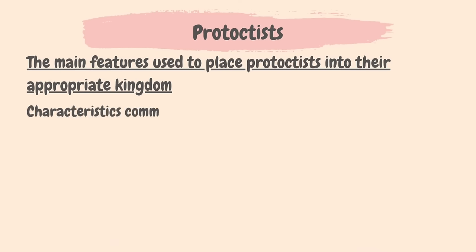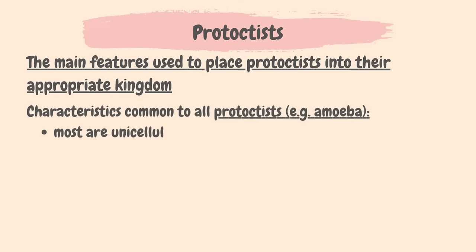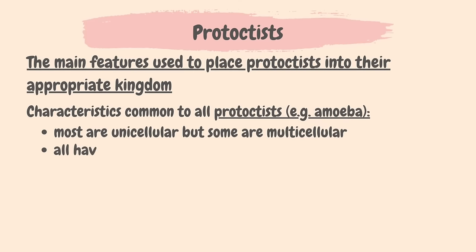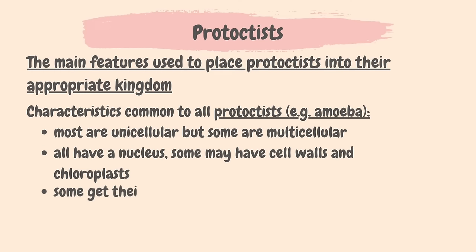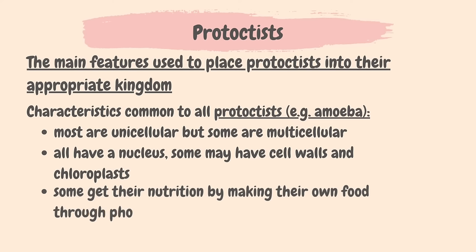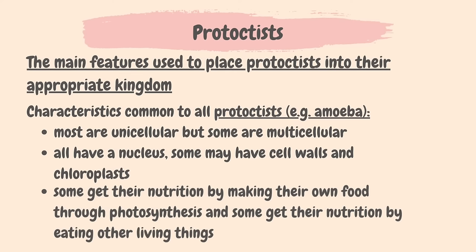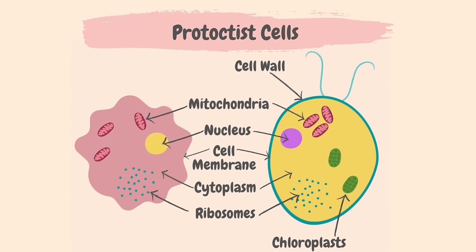The main features of organisms in the protoctist kingdom are: most are unicellular, but some are multicellular; all have a nucleus; some may have cell walls and chloroplasts; some get their nutrition by making their own food through photosynthesis and some get their nutrition by eating other living things. Here are some examples of protoctist cells — as you can see, some may have cell walls and chloroplasts and some may not.